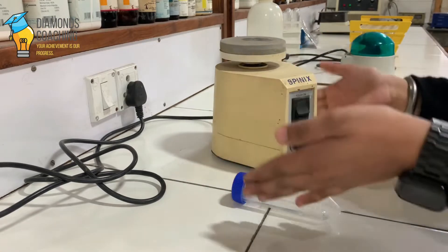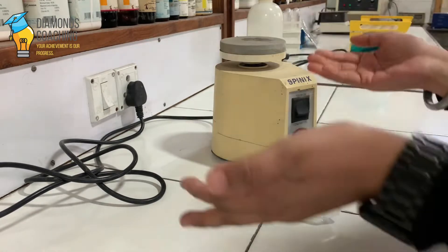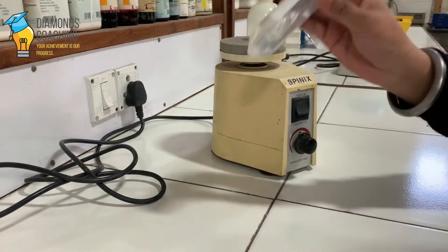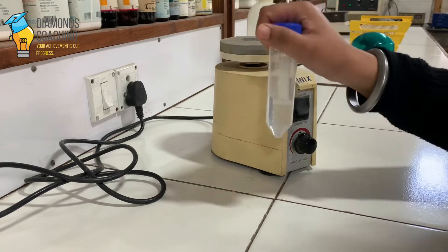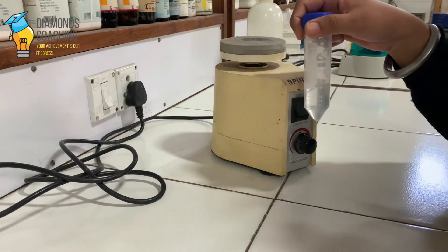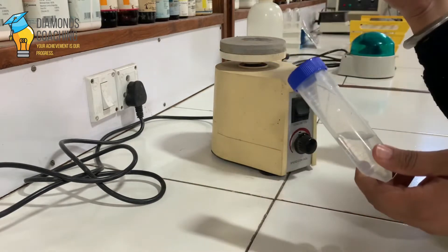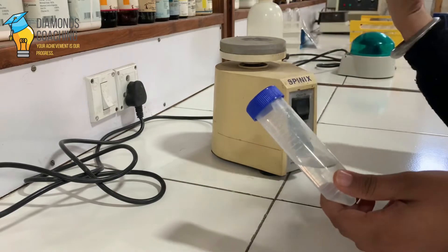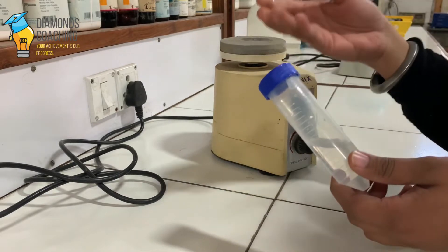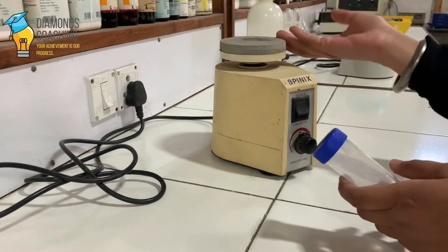This is a little apparatus which is a vortex shaker where we use these kinds of small vials to mix the ingredients or any chemicals of any experiment we are doing or carrying. So let's begin - how does it work?